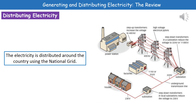Once we've generated this electricity in a power station, we obviously need to transfer it to all of the different places around the country that need electricity, and we do this through something called the national grid. In that diagram is a summary of the national grid. We've got our power station, and that energy then goes into a step-up transformer, which increases the voltage to 400 kV — that's 400,000 volts.